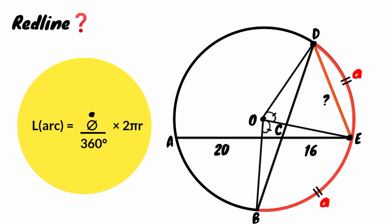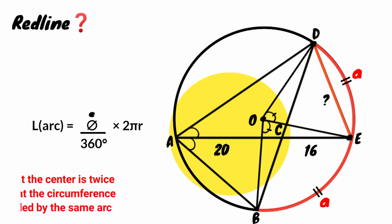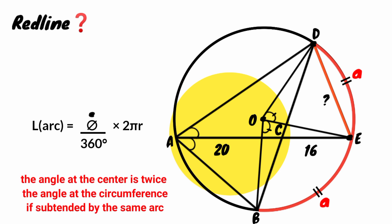If the central angles are equal, of course the angle they subtend to the circumference must also be equal, because of the rule from circle theory that the angle at the center is exactly twice the angle at the circumference if subtended by the same arc.